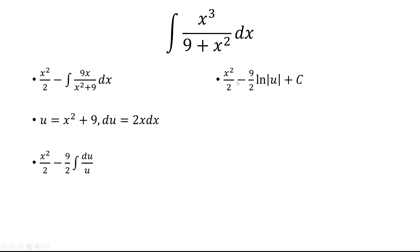Integrate we get x squared over 2 minus 9 halves times natural log of absolute value of u plus c. And remember u we said was x squared plus 9. And so this is our final answer.